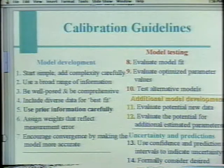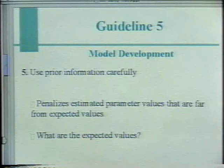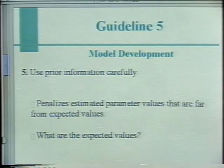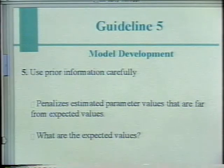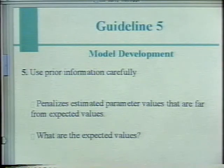Number five is: use prior information carefully. Notice I say use prior information carefully — I don't say don't use prior information. Prior information penalizes estimated parameter values that are far from the expected value. You take hydrologic and hydrogeologic information and use that to say what you expect the parameter values to be, then penalize the regression if it moves those values too far from those expected values.